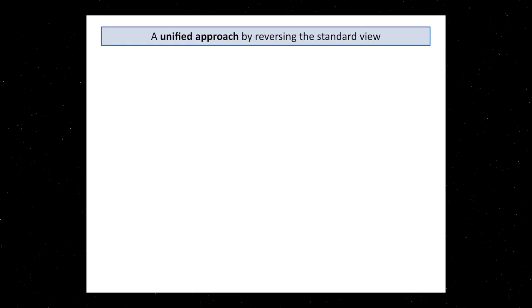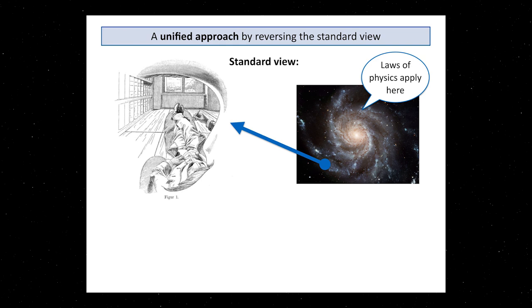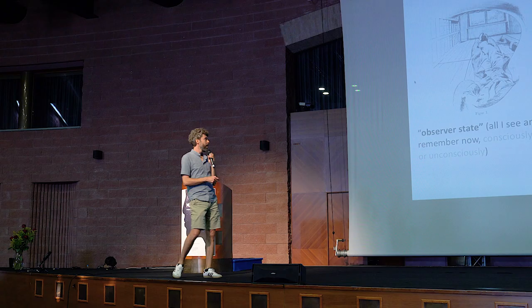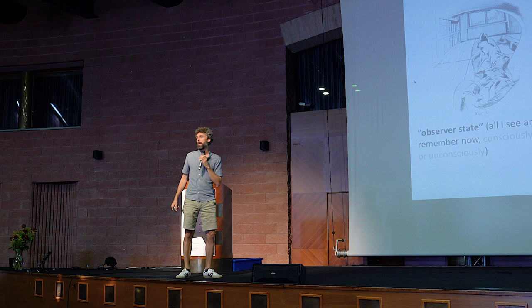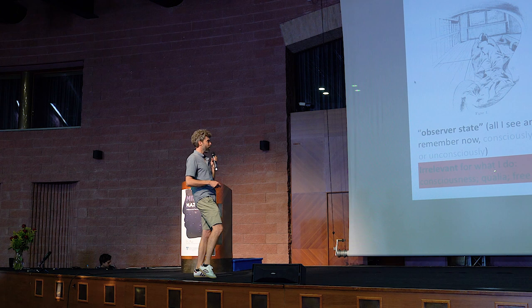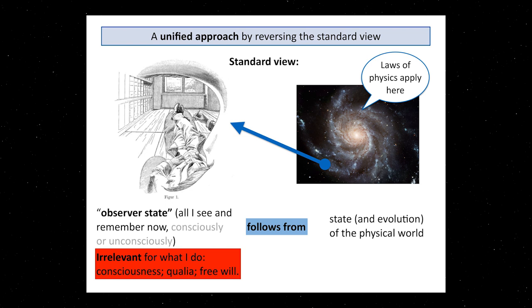Here's a way how you can do it, or at least try it. The idea would be to reverse the standard view that we tend to hold on ourselves in the world. The usual view would be we have a world, there's laws of physics that determine its evolution, and somehow we supervene on the world. If we look at ourselves, all that I see, all that I remember, everything that makes up me, we think that follows from the evolution and the state of the physical world. It supervenes on it. I should say again, I'm not talking about consciousness, or qualia, or free will. When I talk about the state of the observer, think of some kind of information theoretic description, every information that you locally hold.